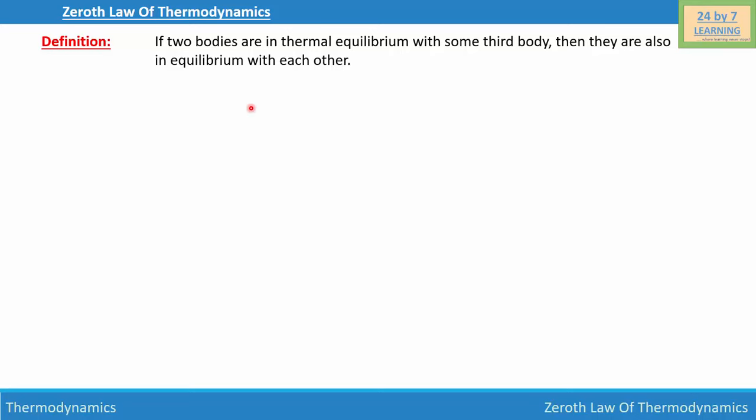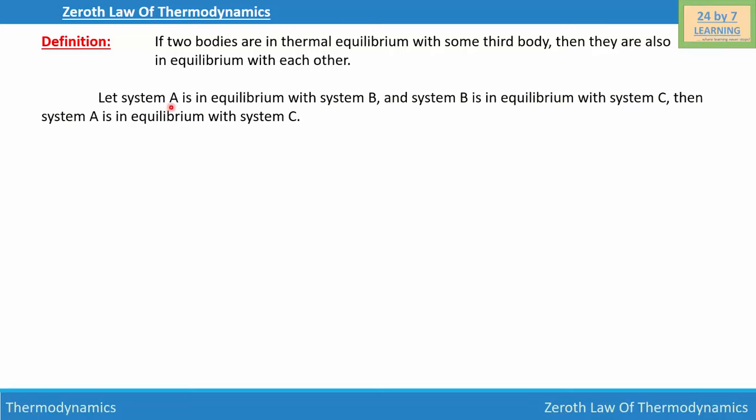Bodies A, B, and C. Let system A be in equilibrium with system B, and system B be in equilibrium with system C. Then system A is in equilibrium with system C.